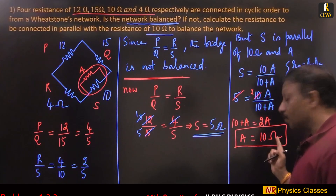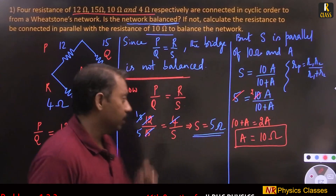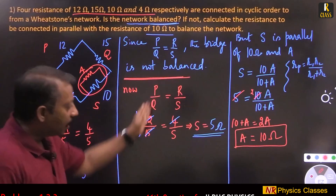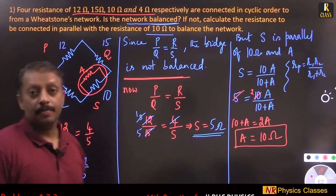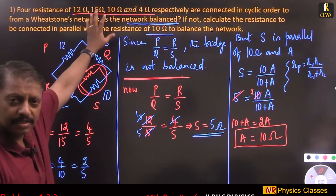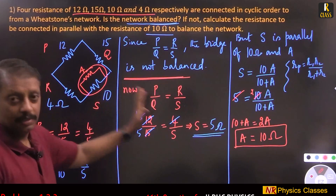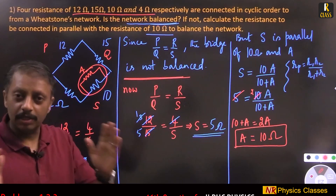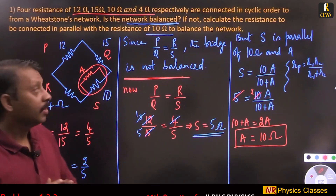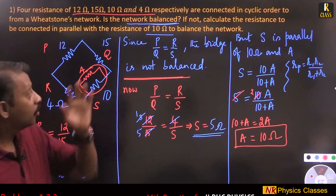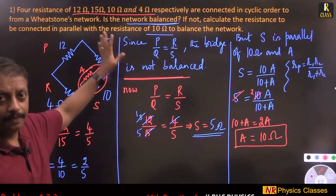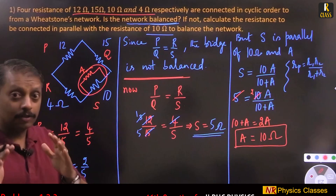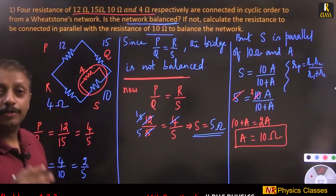Don't forget the SI unit — the answer is 10 ohm. So in the diagram we have proved it is not balanced, then found the parallel resistance. Students, copy the problem, understand it, and then solve. Since it is a board exam, 3 hours is really sufficient to answer all questions, so spend 1 or 2 minutes to understand the problem before solving.